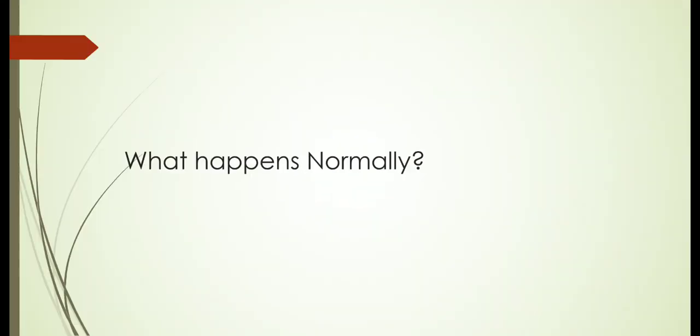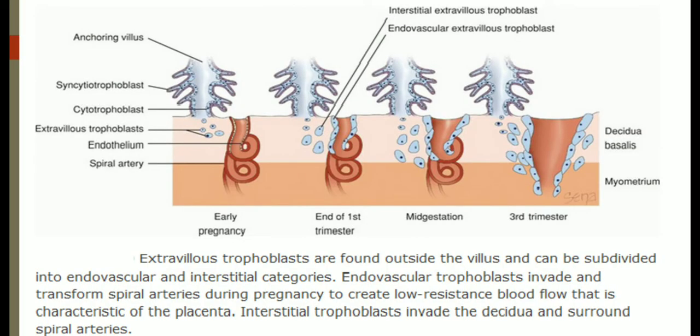What happens normally? Extravillous trophoblasts are found outside the uterus and can be subdivided into endovascular and interstitial categories. Endovascular trophoblasts invade and transform the spiral arteries during pregnancy to create the low resistance blood flow that is characteristic of placenta.